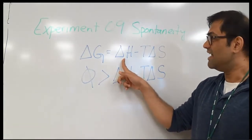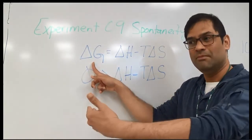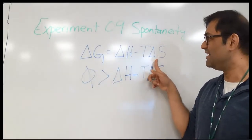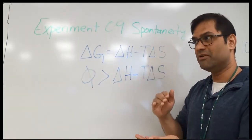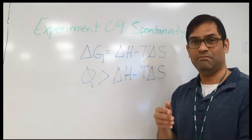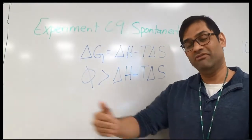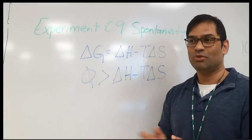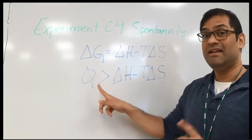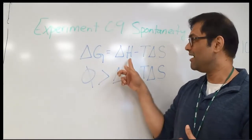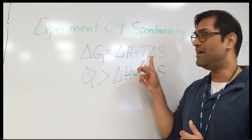Delta H is enthalpy — if it's negative, that is a good contributor towards delta G moving towards the product side. Delta S is entropy — if that is positive, that's a good contributor for the reaction moving to products. Some reactions require temperature to be increased to move forward. The ultimate judge is delta G, and it takes input from three thermodynamic parameters: enthalpy, entropy, and temperature.